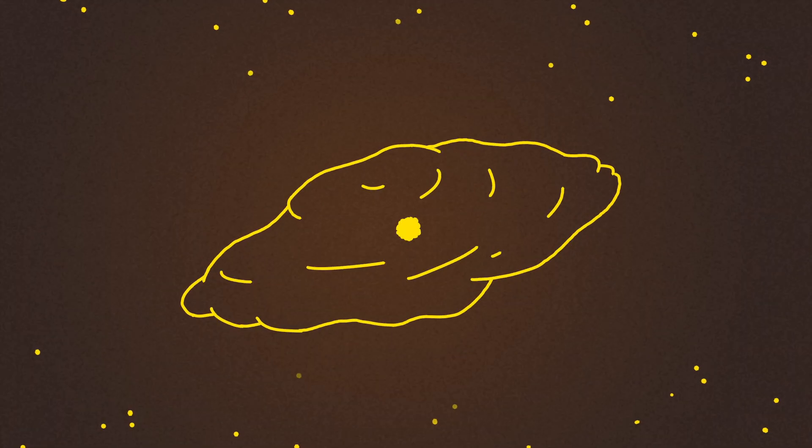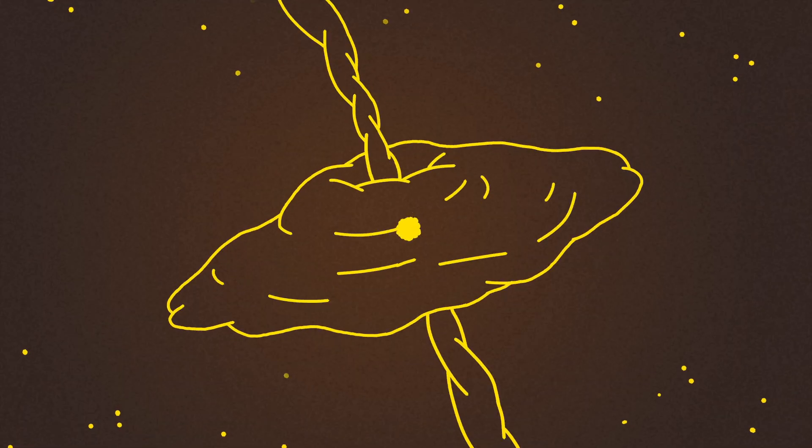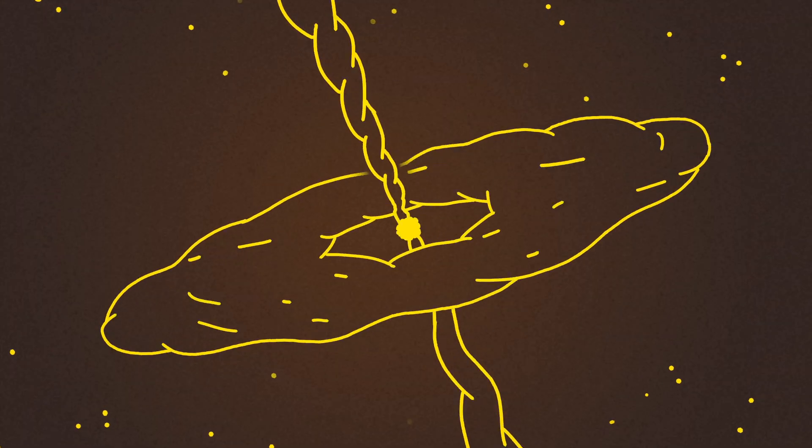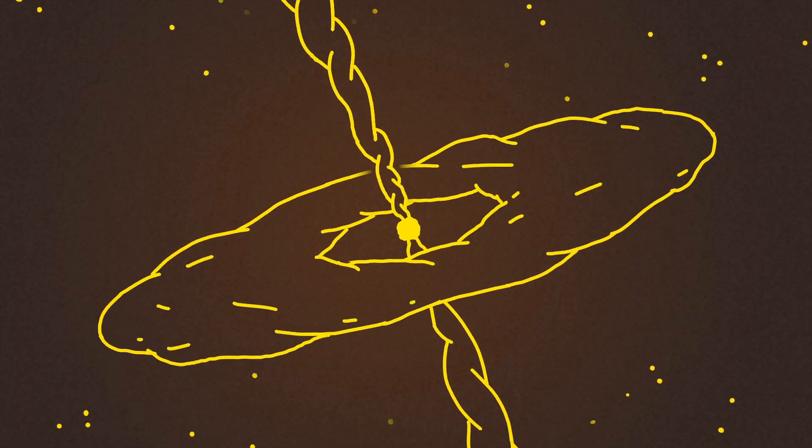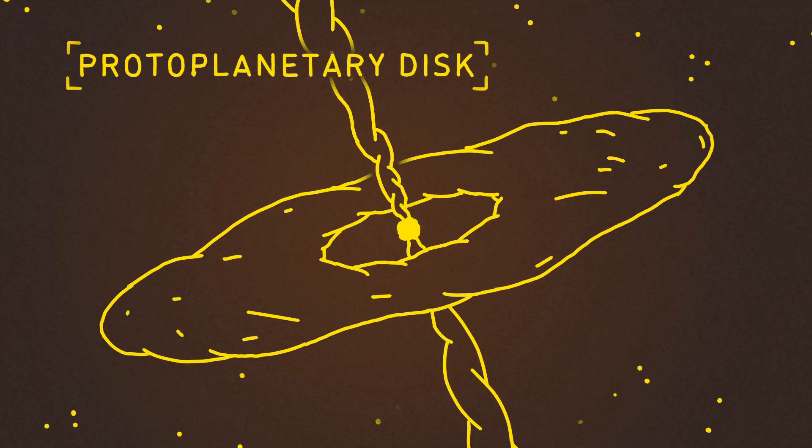As fusion begins in the new star, it sends out jets of gas that blow off the top and bottom of the cloud, leaving behind an orbiting ring of gas and dust called a protoplanetary disk.